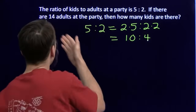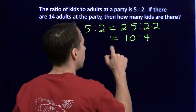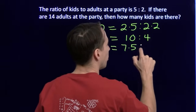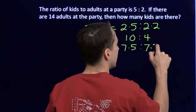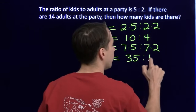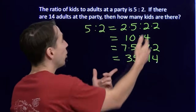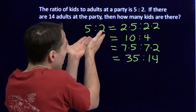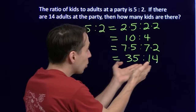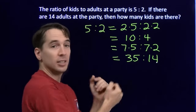4 isn't 14. In order to get to 14 adults, we need 7 of these groups. So we take our ratio and multiply both parts by 7, giving us 35 to 14: 14 adults, 35 kids. So we've answered the problem — there are 35 kids at the party. What we're doing is taking the ratio, multiplying both parts by the same number, and that gives us an equivalent ratio. We found a ratio with 14 adults, so the number of kids is 35.